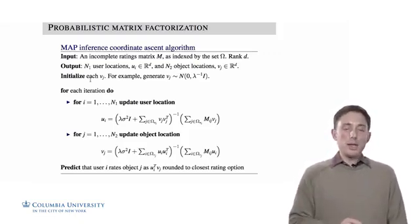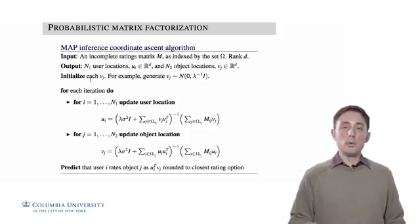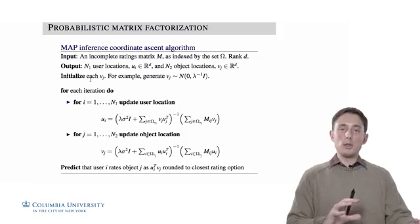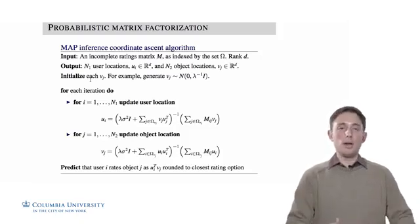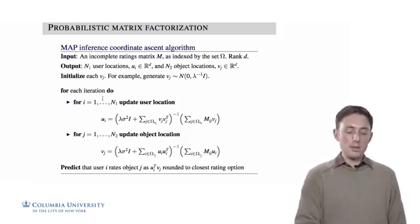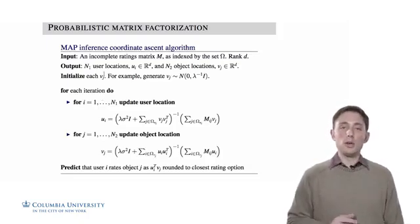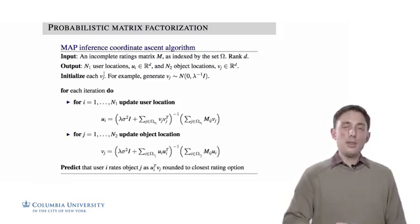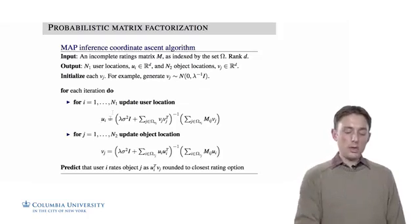First, we're going to initialize each of the object locations. We could have also initialized the user locations first and then flipped the algorithm. I've chosen in this slide to first initialize the object locations, for example, we could just generate them randomly. Then, for each iteration, we follow the two coordinate ascent steps.